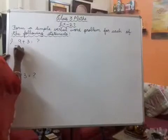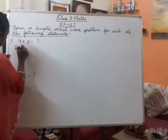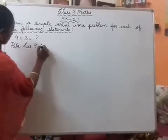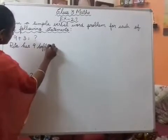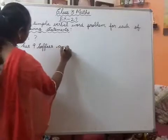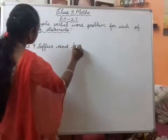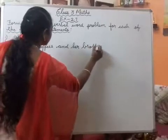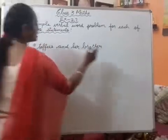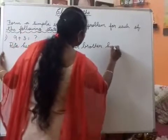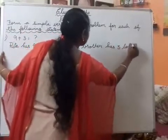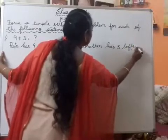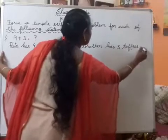Rita has 9 toffees and her brother has 3 toffees. Okay, full stop.